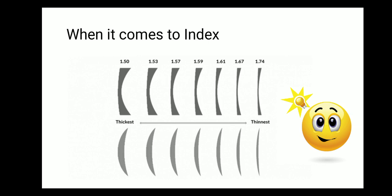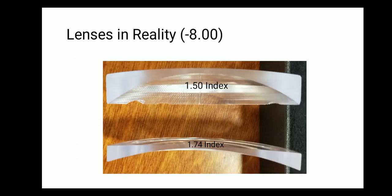However, thickness is not everything — your index also has something called optics which we need to consider. Before getting into the optical properties, let us see how the real lens looks. I have an example of a minus 8 lens here for you. You can compare the thickness of a 1.5 index versus a 1.74 index lens. Obviously, the 1.5 looks way too much thicker compared to the 1.74, and index-wise it makes a huge change — look at the edge thickness of the 1.5 on top versus the 1.74 at the bottom. But index alone is not everything; we also have to look into certain optical properties.